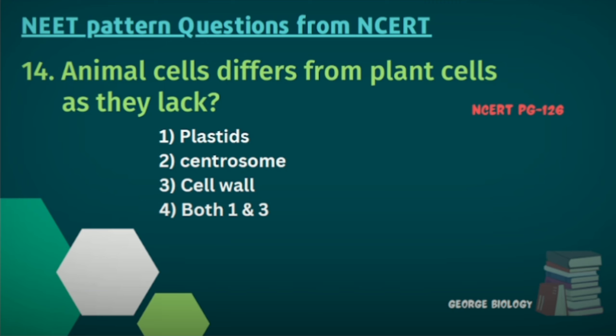Question fourteen: Animal cells differ from plant cells as they lack — plastids; centrosome; cell wall; or both options 1 and 3. The answer is the fourth option — animal cells do not have plastids or a cell wall.